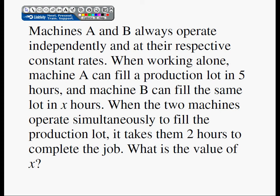Machines A and B always operate independently and at their respective constant rates. When working alone, machine A can fill a production lot in five hours, and machine B can fill the same lot in X hours. When the two machines operate simultaneously to fill the production lot, it takes them two hours to complete the job. What is the value of X?